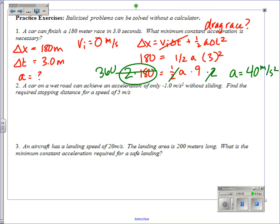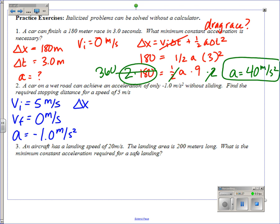Let's try question two. A car on a wet road can achieve an acceleration of only negative one meter per second squared without sliding. Find the required stopping distance for a speed of five meters per second. So this five meters per second must be our initial velocity, and we're looking for a stopping distance which means our final velocity is zero. They've told us that the acceleration is negative one meter per second squared, and we'd like to know stopping distance.